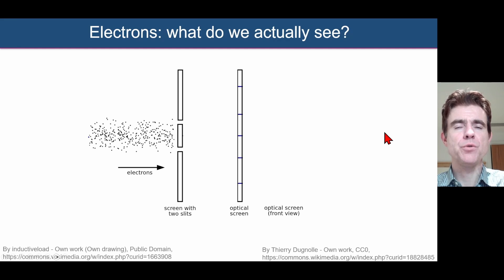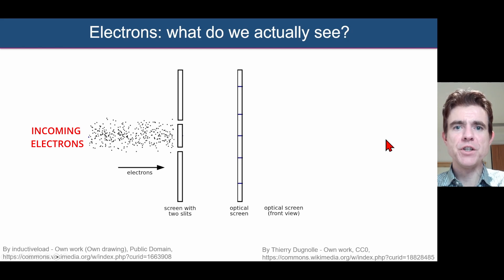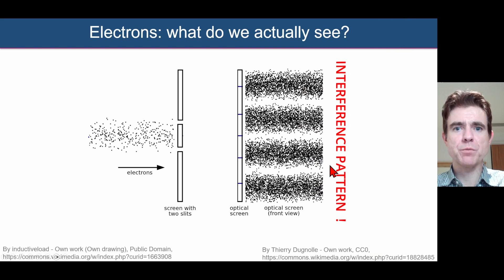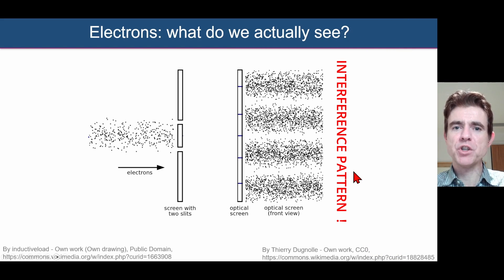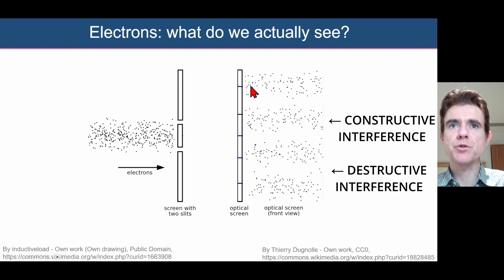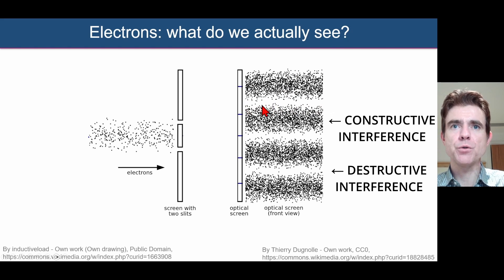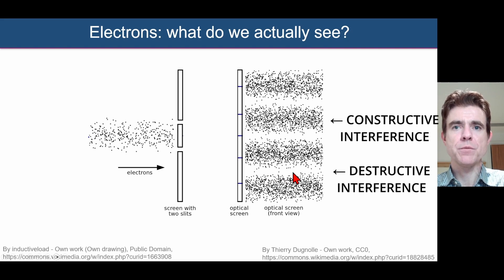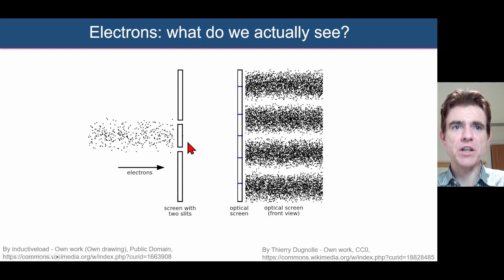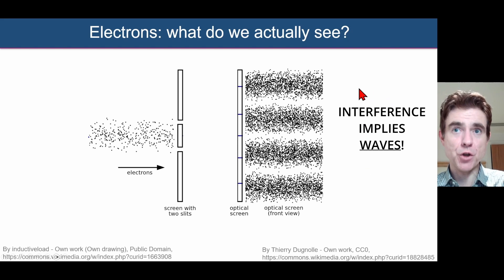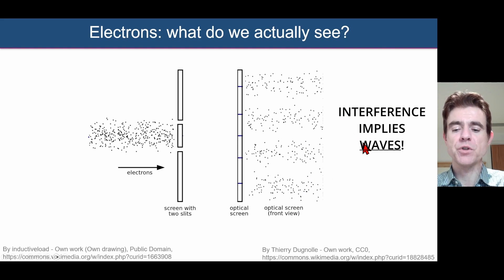Now let's see what happens if we fire electrons at a screen with two slits. What is observed is very remarkable. What we actually see is this characteristic interference pattern, taking us right back to what we've seen for light waves and even water waves — bands of reinforcement, in other words constructive interference, and also regions where there are effectively no detections, so regions of destructive interference. We see that these electrons going through two slits produce an interference pattern, even though we are still detecting discrete positions of those electrons.